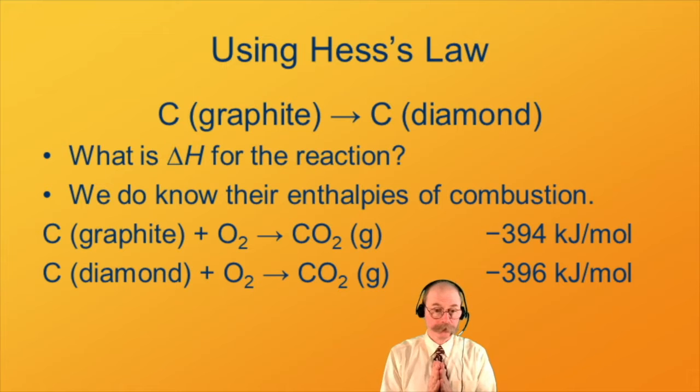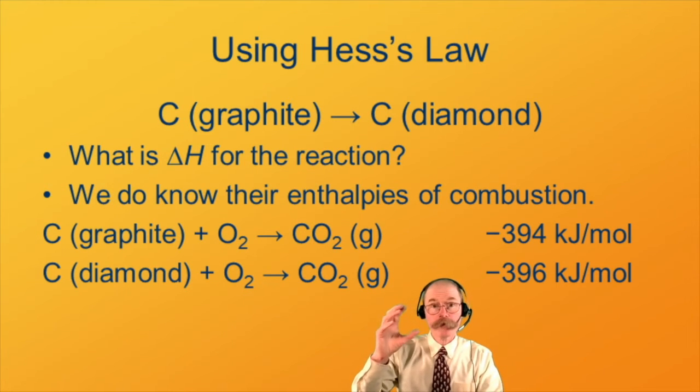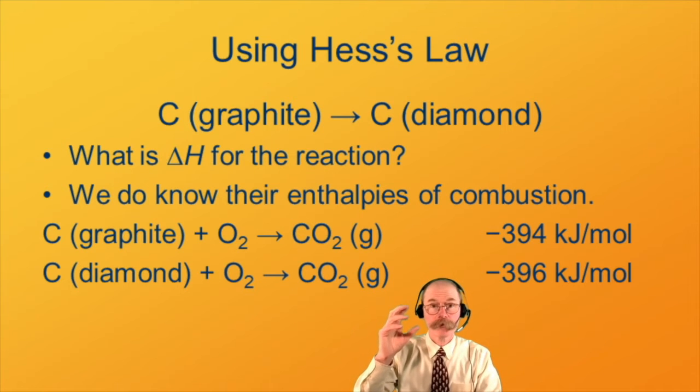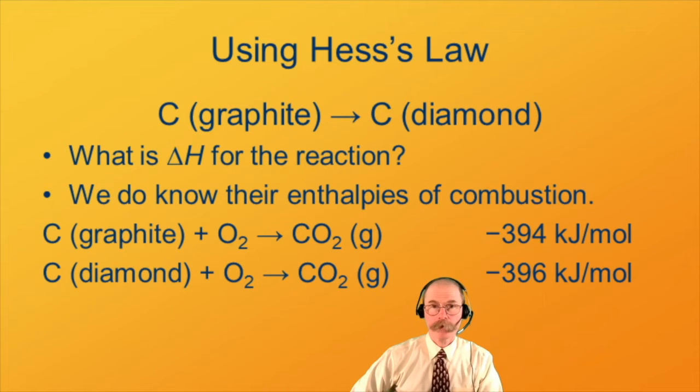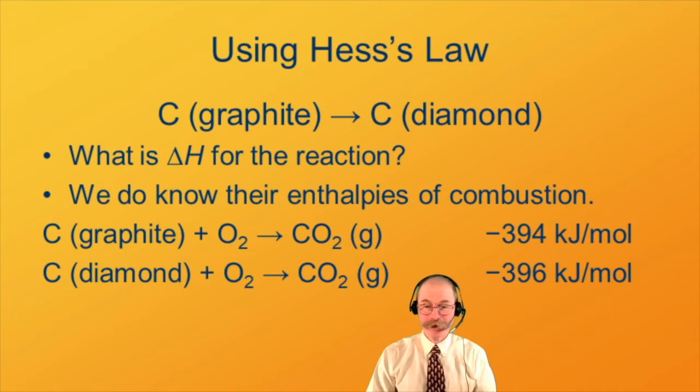So yes, that means that someone has taken graphite, burned it, measured how much energy is absorbed, and also taken diamond, burned it, and measured how much energy is absorbed. I'm not going to recommend that you burn diamond, but it can happen. So we see here that minus 394 kilojoules per mole of heat is absorbed when graphite burns. Since that's a negative number being absorbed, that means that heat is released. Similarly, minus 396 kilojoules of heat is absorbed when diamond is burned.